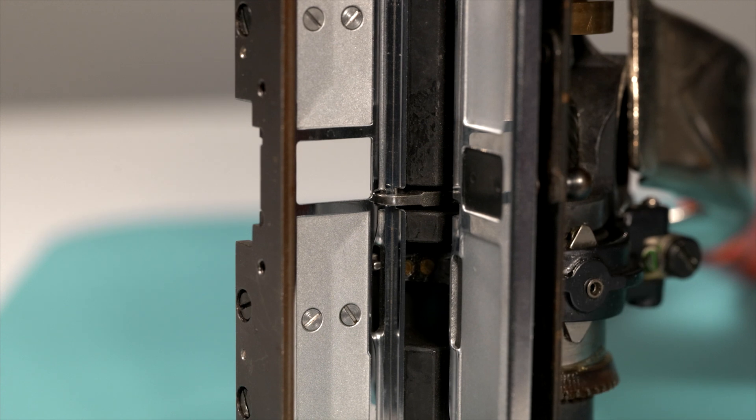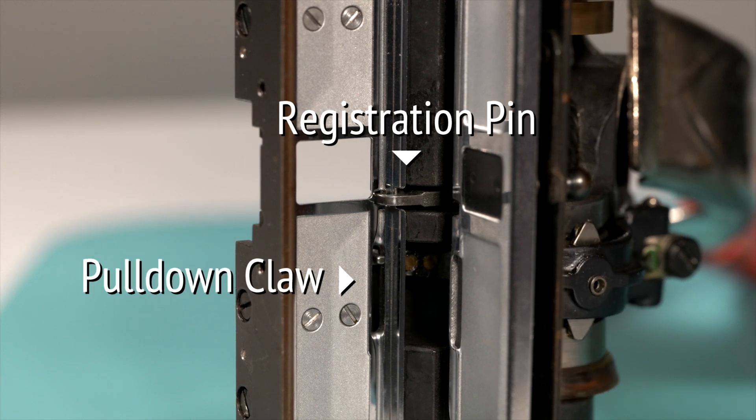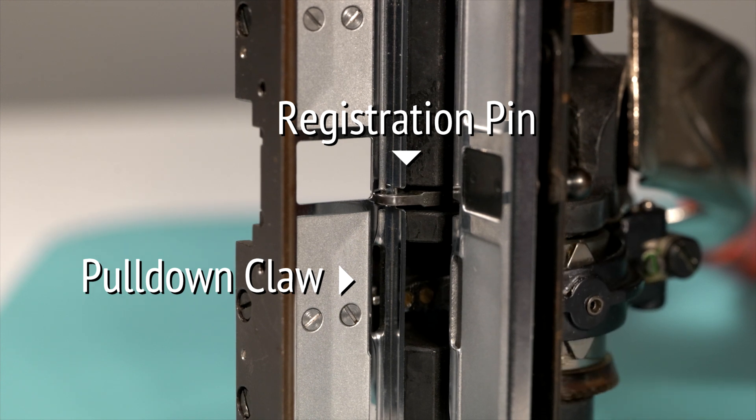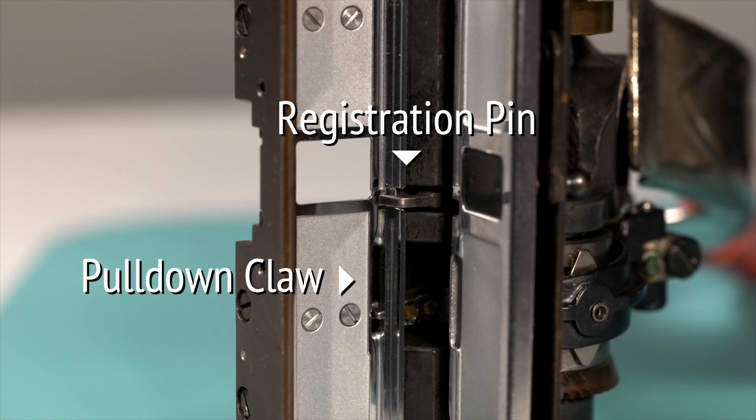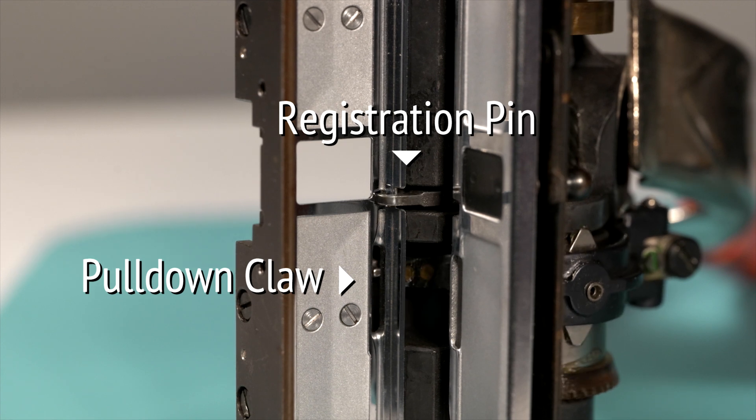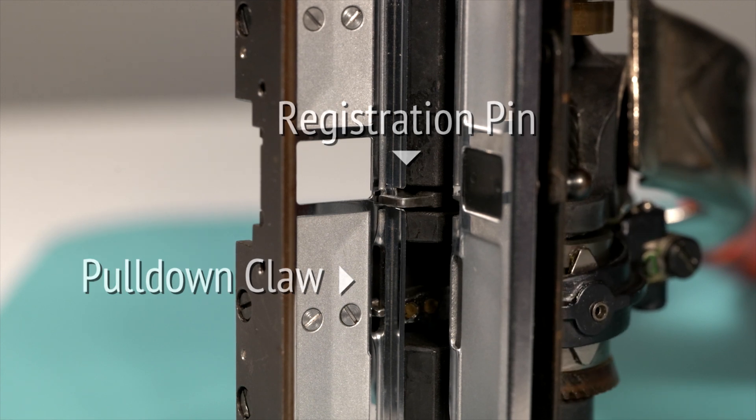With each turn of the main shaft, the claw engages the film and pulls it down to the next frame. When positioned, a precision registration pin holds the film exactly in place as the exposure would have been taken.